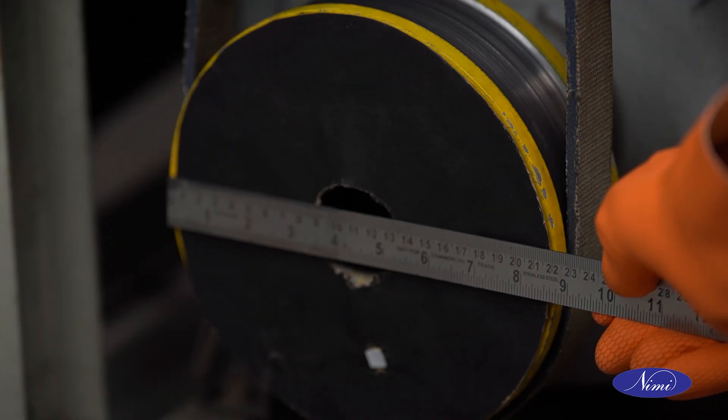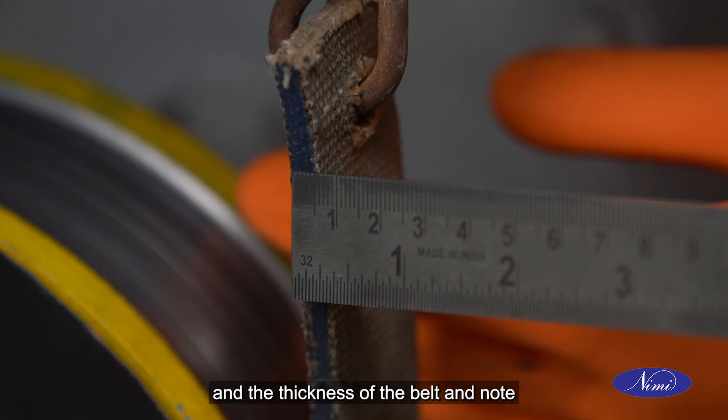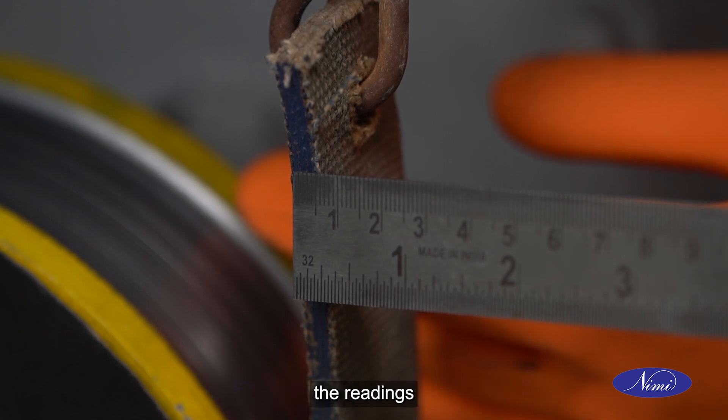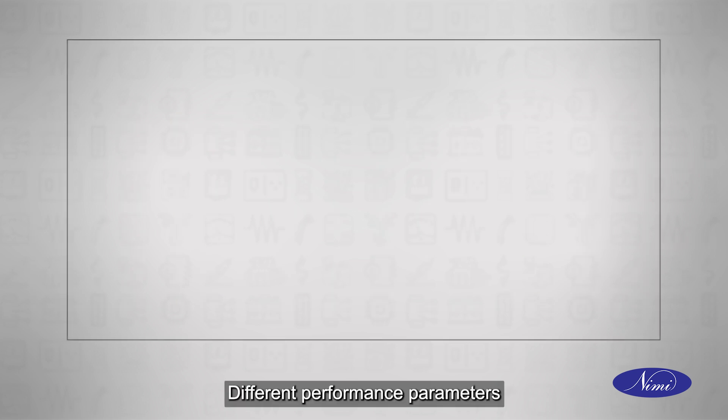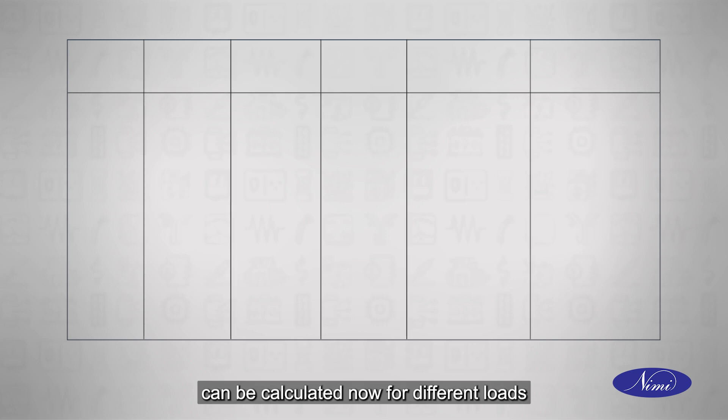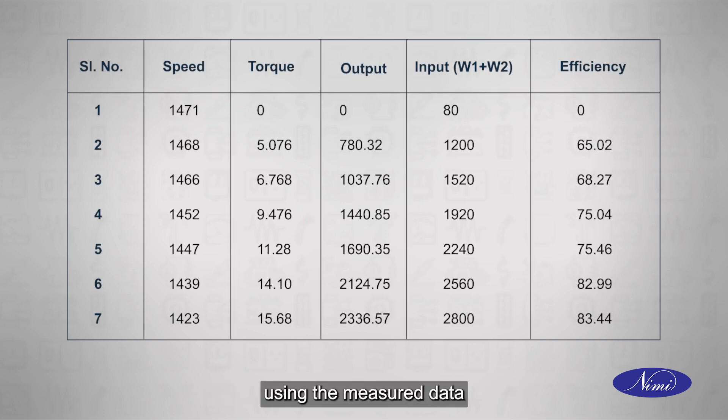Measure the brake drum radius and the thickness of the belt and note the readings. Different performance parameters can be calculated now for different loads using the measured data from the experiment and tabulated.